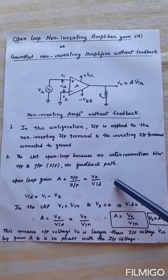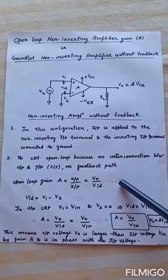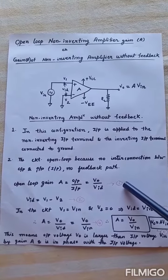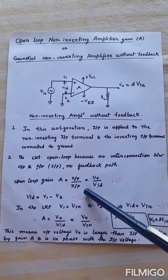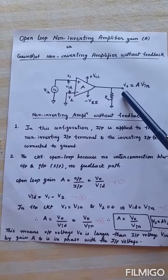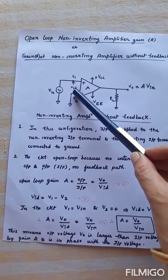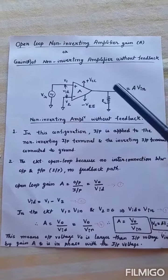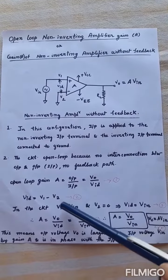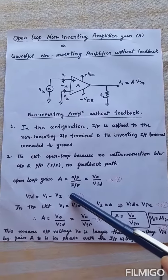Coming to the equation, open loop gain capital A. Gain is what? Output by input. What is the output voltage? V naught. What is the input voltage of the op-amp? Vid. What is Vid? Difference input voltage, which is written as V1 minus V2.